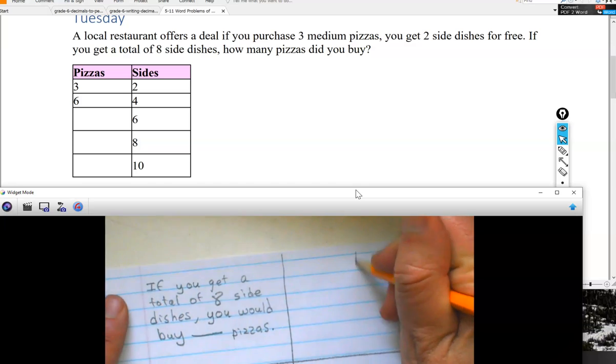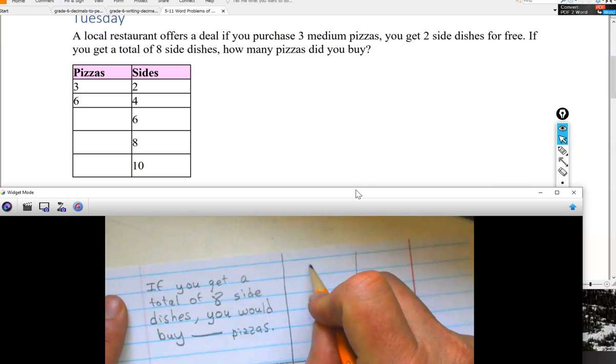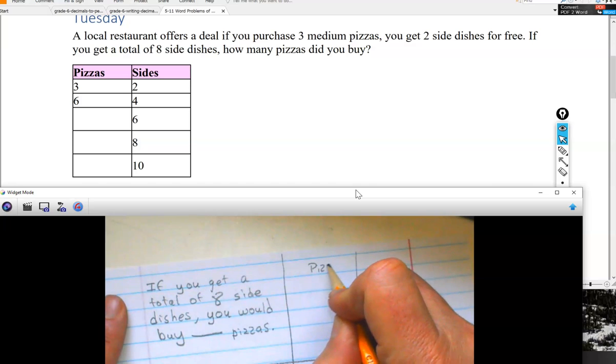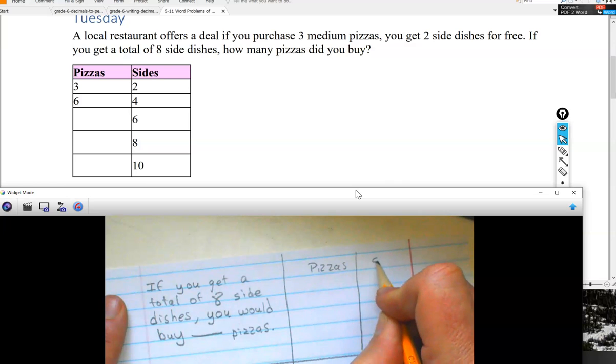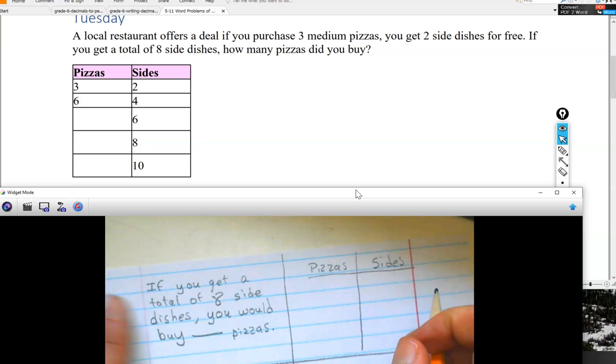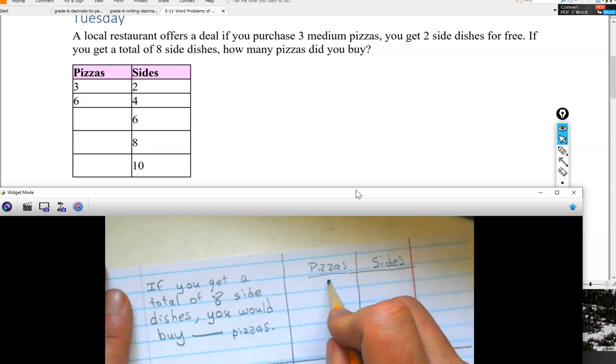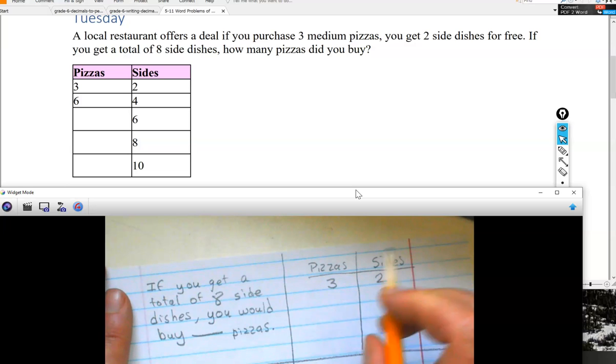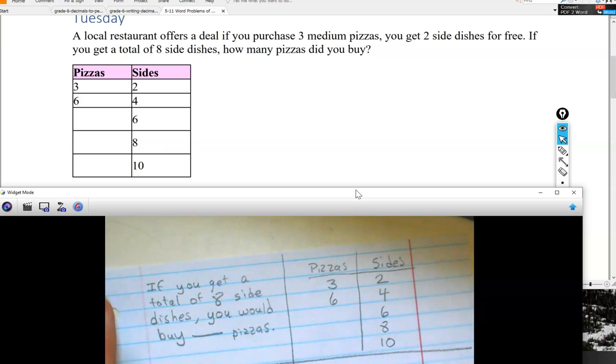Now there's two columns. There's going to be pizzas and sides. On my table, they've already written out that if you get three mediums, you get two sides. If you have six pizzas, you get four sides. If you have six sides and eight sides and ten sides, those are left blank.